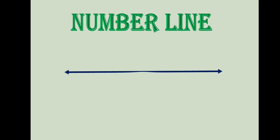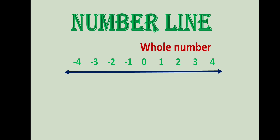Now let's learn integers on the number line. A number line, as we have already learned, is different from a number ray. When representing whole numbers or natural numbers, it is like a number ray because they start from a fixed number. But the number line for integers never starts or ends at any particular number. This number line includes whole numbers, which start from zero.